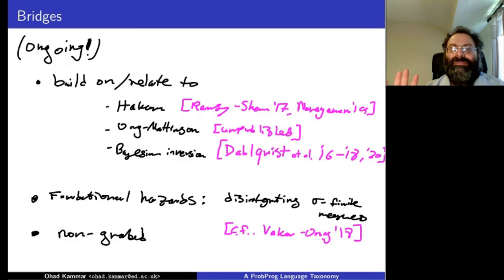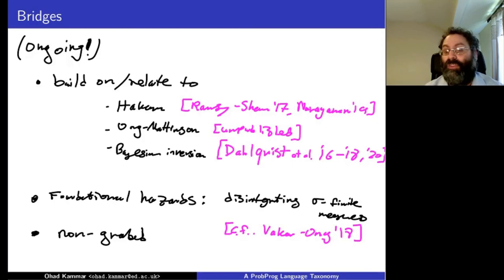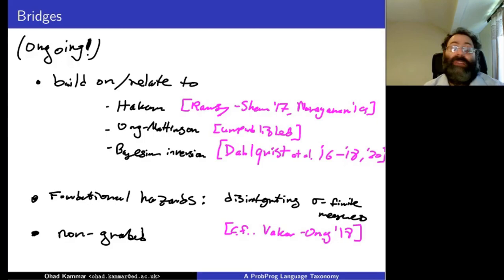I haven't talked at all about the fourth, bottom-right square of the taxonomy — non-graded sampling with distribution-based conditioning. It would be very interesting to find languages that fit there and develop new inference algorithms for it. Maybe there's a new language to be discovered, or maybe one has to compile from the bottom-right corner up to the top-left corner to make inference work. I don't have much specifics to say in this area yet.